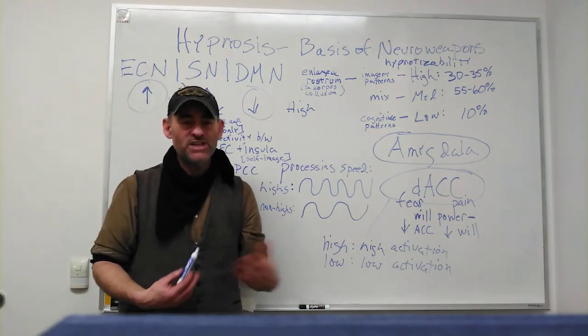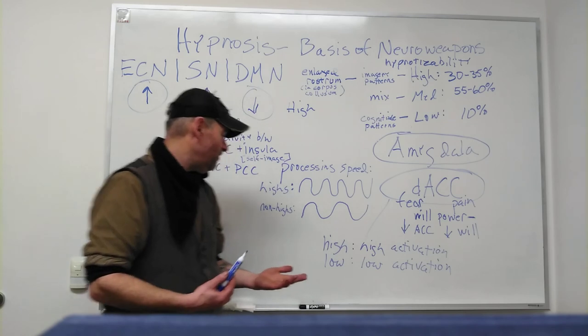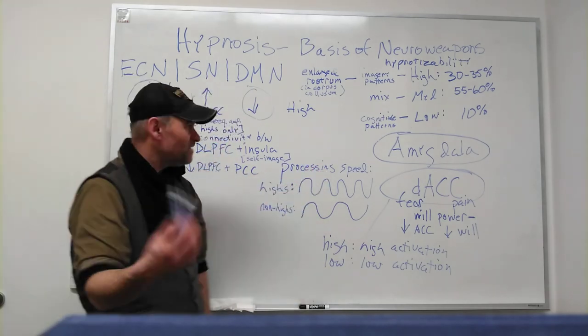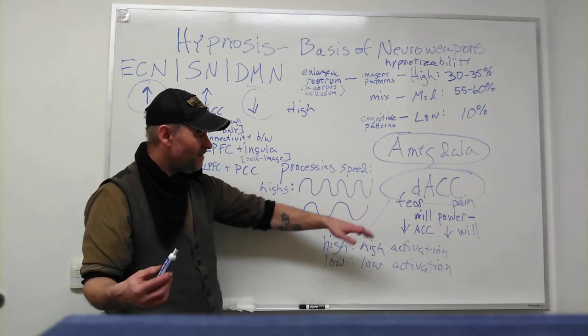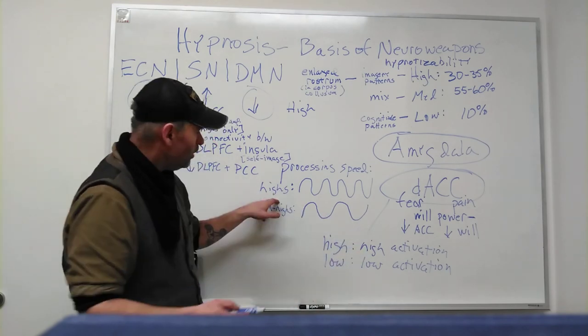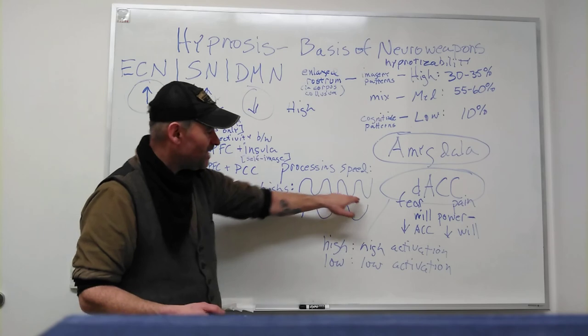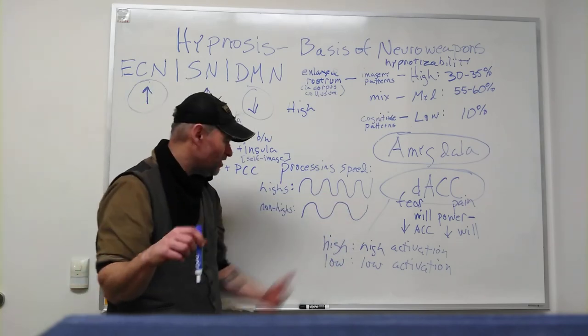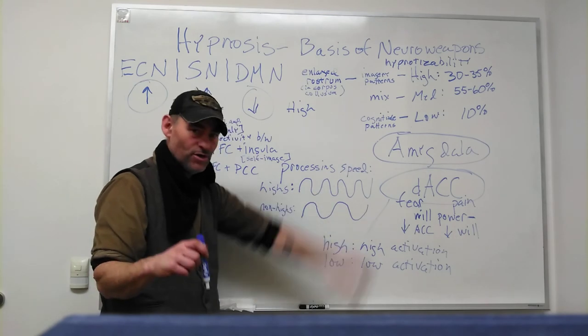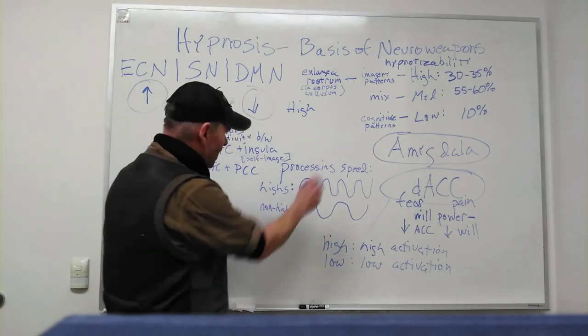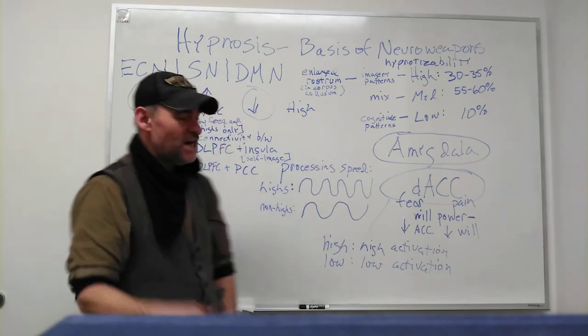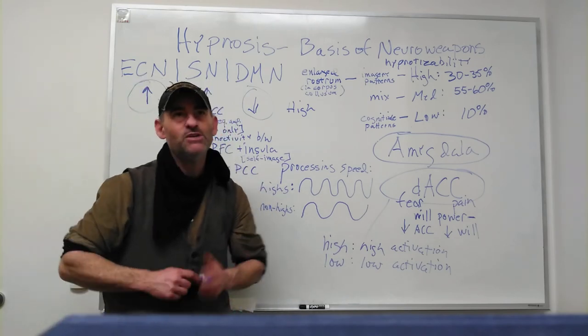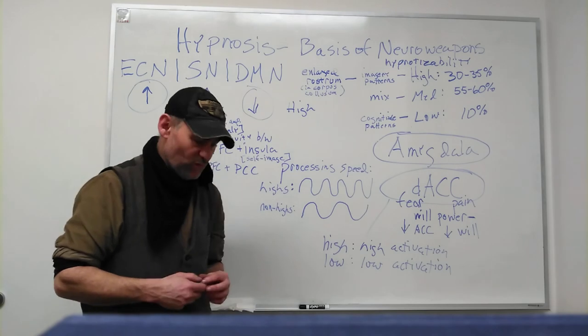One of the other differentiations they've shown between highly hypnotizables and the rest of people is that the processing speed, specifically of the ACC, is much faster. It's at like one one-thousandth of a millisecond I think it is, whereas the rest of us is slower. This processing speed might have something to do with why they're able to go into such deep hypnosis, but researchers are always looking into these issues.